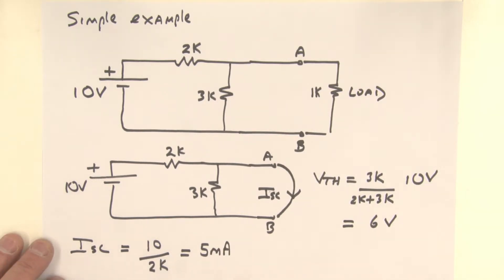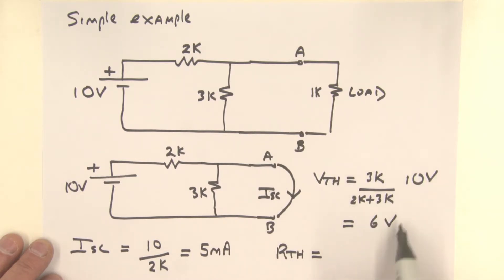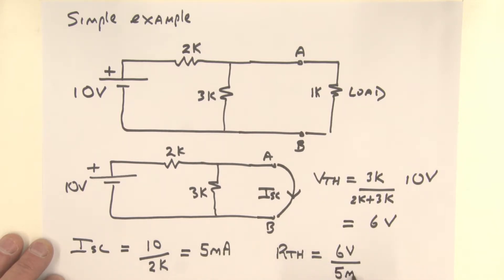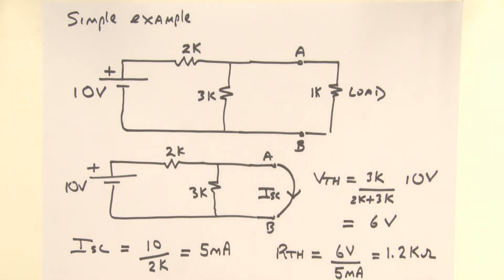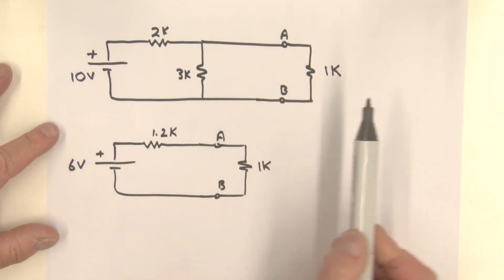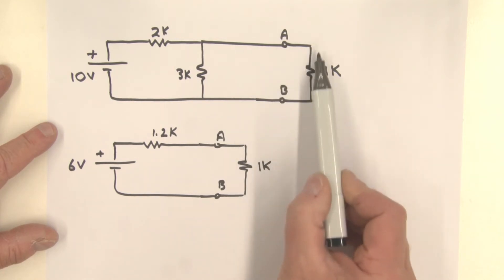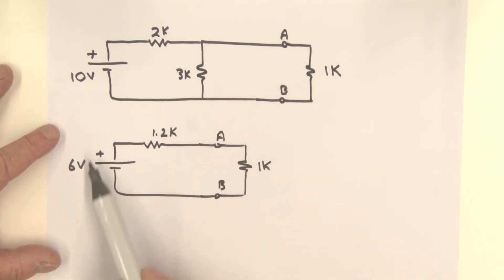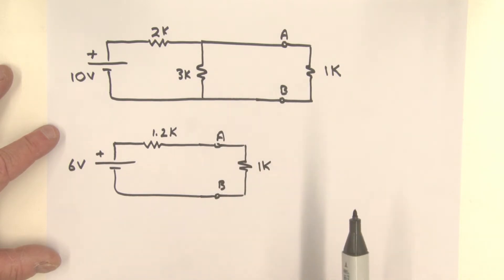The final step is to calculate the Thevenin resistance. R-Thevenin is simply equal to the Thevenin voltage — which is 6 volts — divided by the short circuit current, which is 5 milliamps. Working this out, R-Thevenin comes out to be 1.2 kilohms. So here is the original circuit with the 1 kilohm load attached, and here is the Thevenin equivalent circuit we've just calculated with the load reattached.